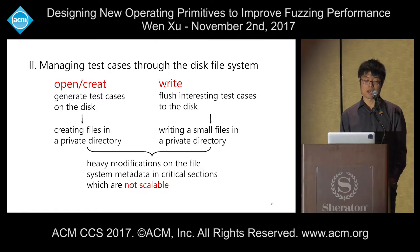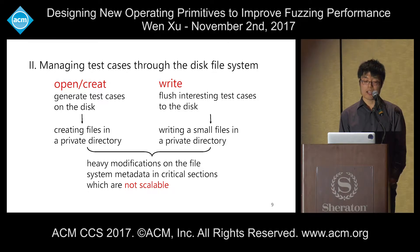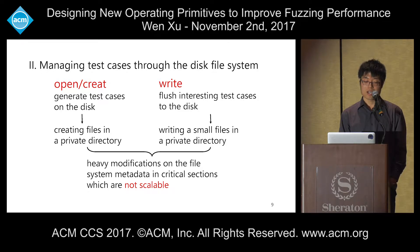The second bottleneck is that fuzzers manage test cases through the disk file system, calling open or create when generating test cases and calling write to flush interesting test cases to disk for persistent storage. These operations involve heavy modifications to file system metadata in critical sections and are considered non-scalable.